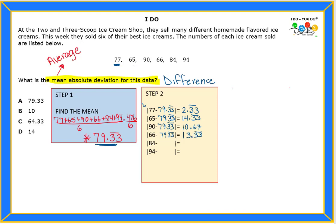The next one is gonna be 84 minus 79 point three three and what do we get? We get four point sixty seven. And the last one is gonna be 94 minus again 79 point three three and what do we get? We get 14.67.